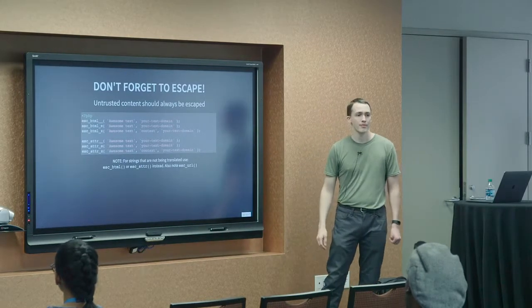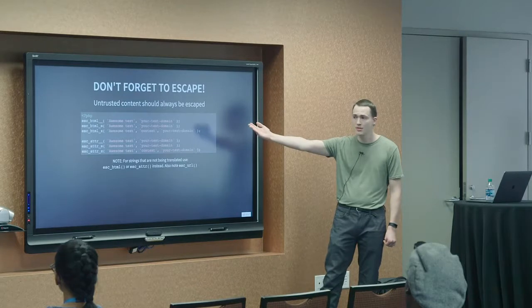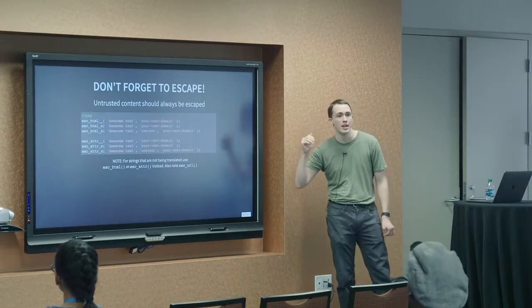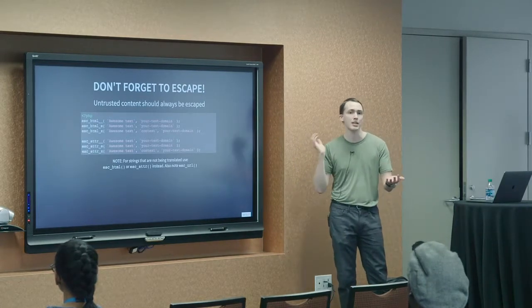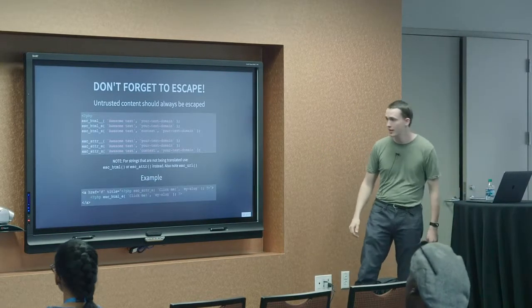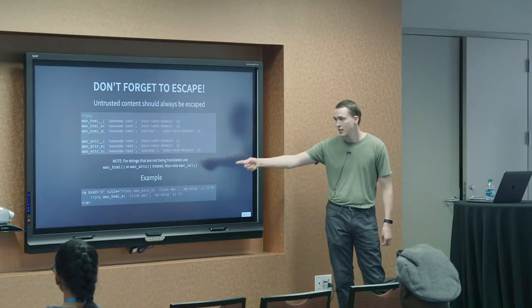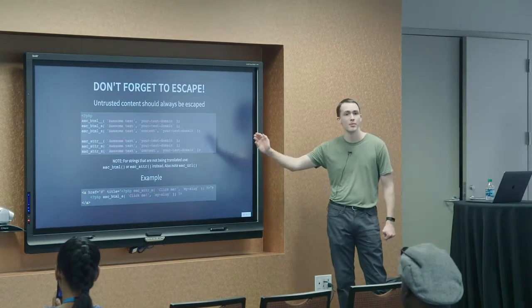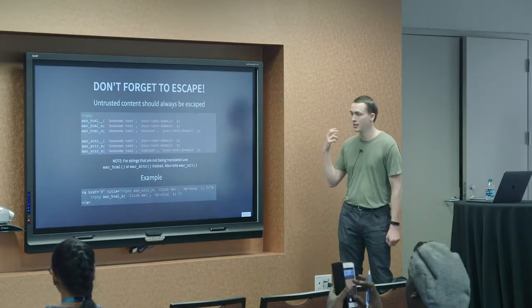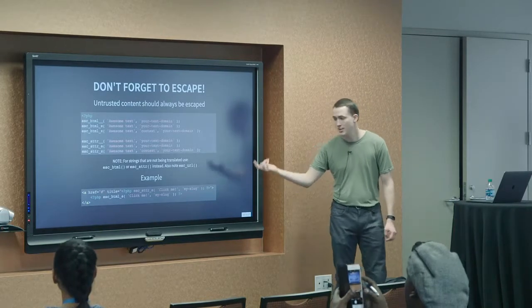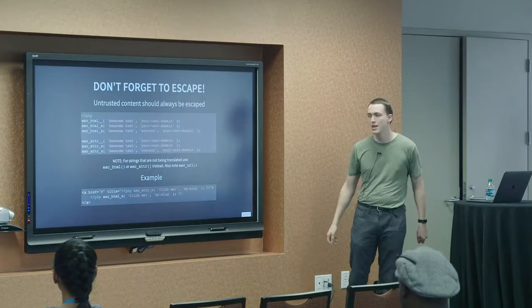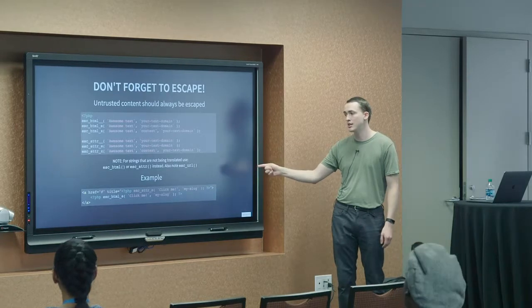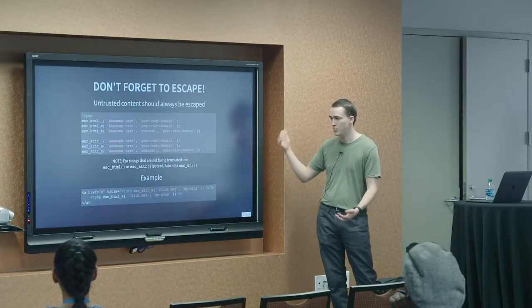So, if your string should never have HTML in it, you can use the esc_html. If it's ever going inside of an HTML attribute, using esc_attr will ensure that it cannot break your markup by breaking the attribute. So, an example of that would be a link tag. You could have the title. Use the esc_attr_e. It will still translate the click me text, but it will ensure that that text does not break your HTML. If somehow the translator accidentally put in a double quote in their text, it's not going to end your link tag early. And break your markup.